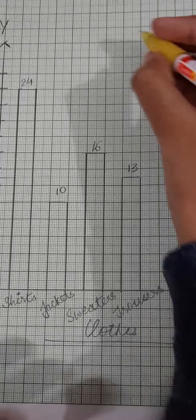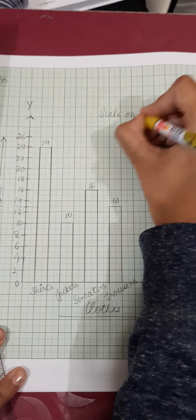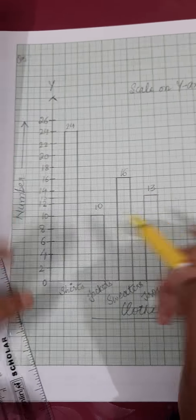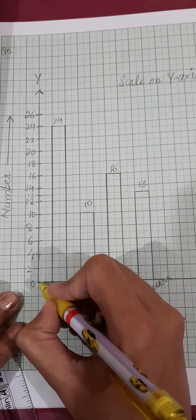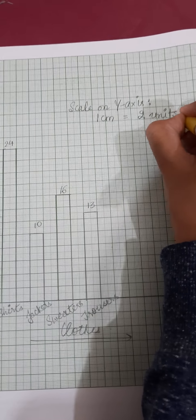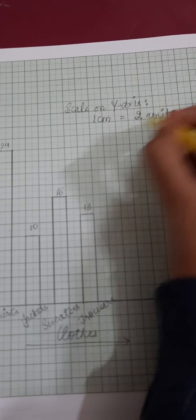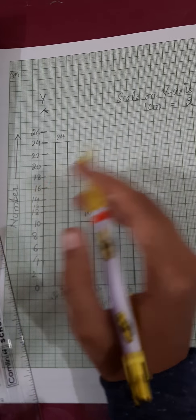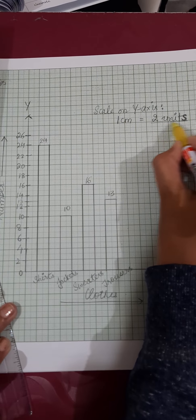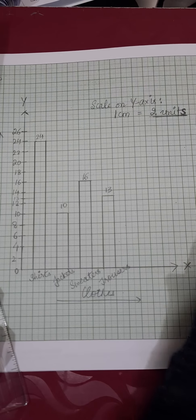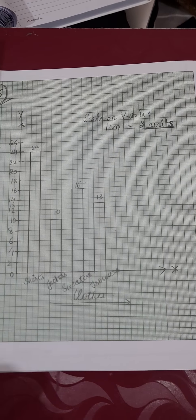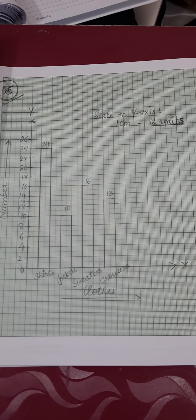Write the scale on the y-axis: one centimeter equals two units. Here the items are simply counted as units — shirts, jackets, sweaters, and trousers. This completes question number five and the complete bar graph for Exercise 15.3. Thank you everyone — complete this exercise.